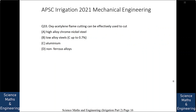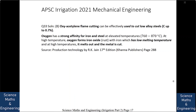Oxyacetylene flame cutting can be effectively used to cut: (a) high alloy chrome nickel steel, (b) low alloy steels with carbon up to 0.7 percent, (c) aluminum, or (d) non-ferrous alloys. The answer is low alloy steels with carbon up to 0.7 percent. Carbon has a strong affinity for iron and steel at elevated temperatures, around 760 to 870 degrees centigrade. At high temperature, oxygen forms iron oxide with iron, which has a low melting temperature and melts out, cutting the metal.